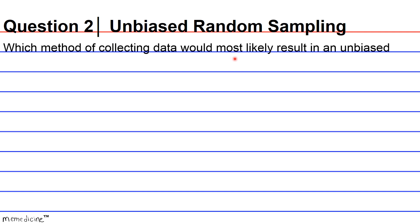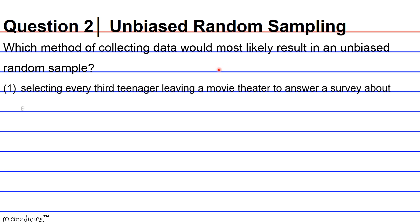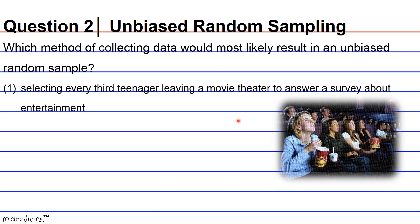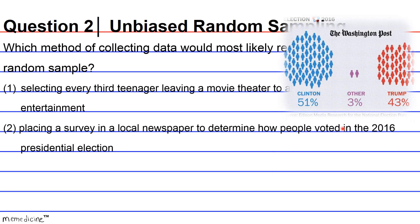Which method of collecting data would most likely result in an unbiased random sample? Is it 1: selecting every third teenager leaving a movie theater to answer a survey about entertainment?